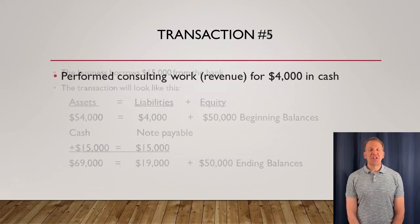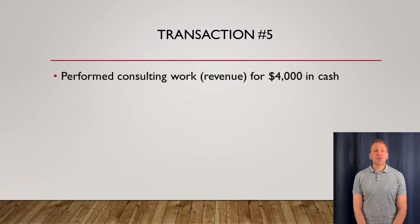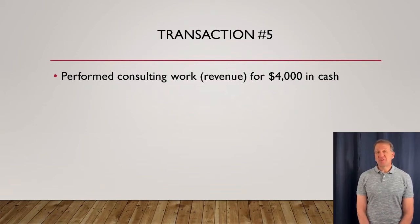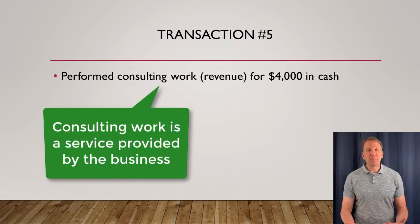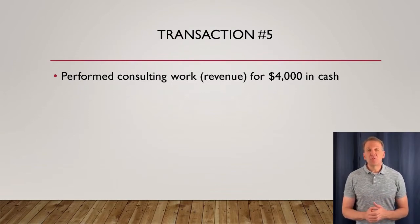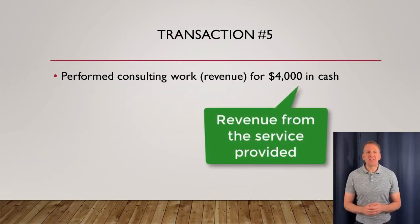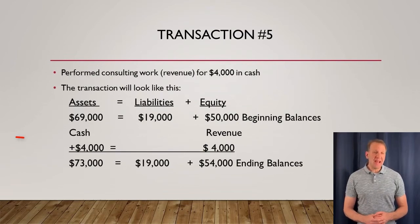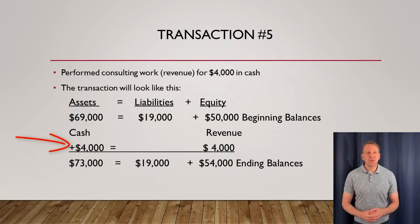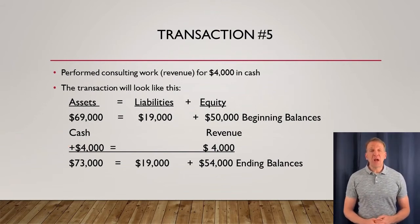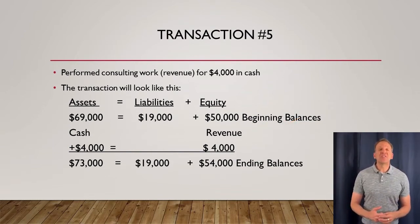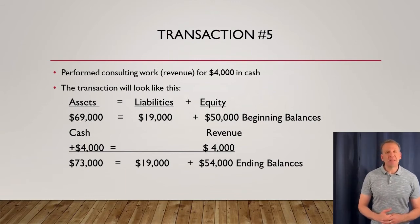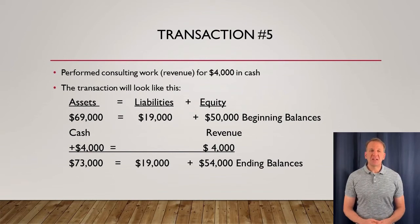Let's move on to transaction number five. Here we're performing some consulting work and receiving cash. This is revenue — the business does consulting work, and this account goes underneath the equity section because revenue is part of equity. Since we're receiving cash, cash is going up $4,000. Revenue under equity is also increasing because this revenue belongs to the owners of the business and increases their value under equity. The accounting equation is still in balance at the end of this transaction.